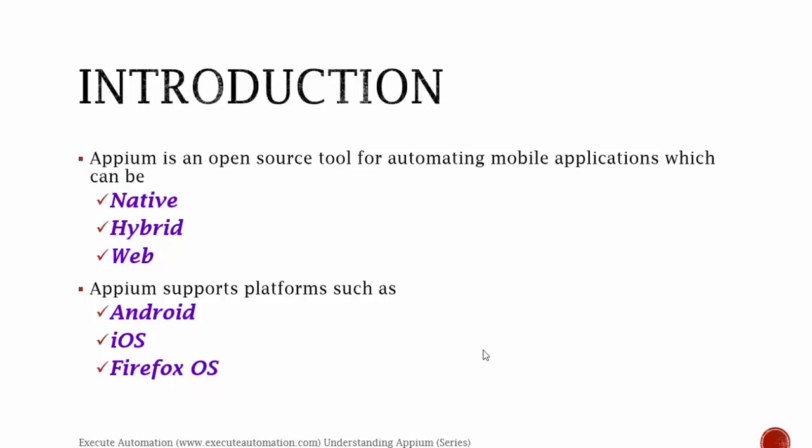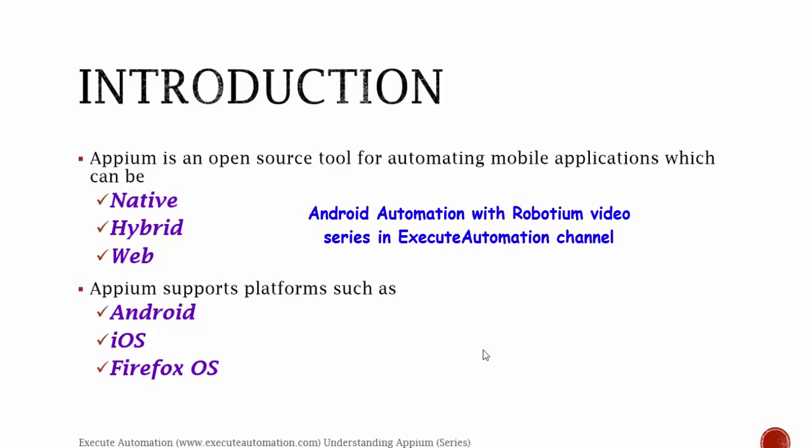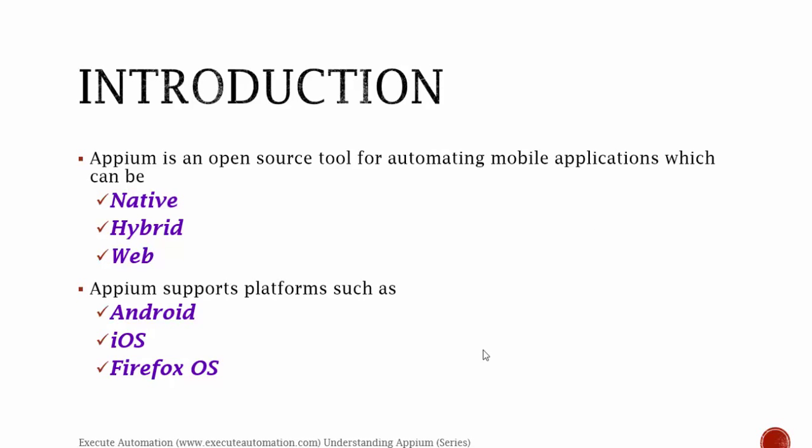If we compare Appium with other automation testing tools like Robotium or Cylindroids, which are the most common and famous automation testing tools, these tools either support Android, iOS, or both, but not Firefox operating system. Appium supports all three operating systems effortlessly, and if you've already watched the Robotium video series you can compare how easy Appium is compared to Robotium.